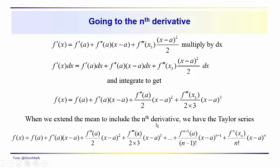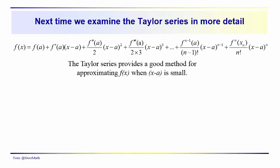When we extend this pattern to the nth derivative, we have what's called the Taylor series: f of x equals f of a plus f prime of a times x minus a, plus f double prime of a over 2 factorial times x minus a squared, plus the third derivative over 3 factorial, up through the n-minus-1th derivative over n-minus-1 factorial, and so on. It goes on indefinitely, but you can usually get a good approximation with 4 or 5 terms. It's a good approach for approximating f of x when x minus a is fairly small — not infinitesimally small.